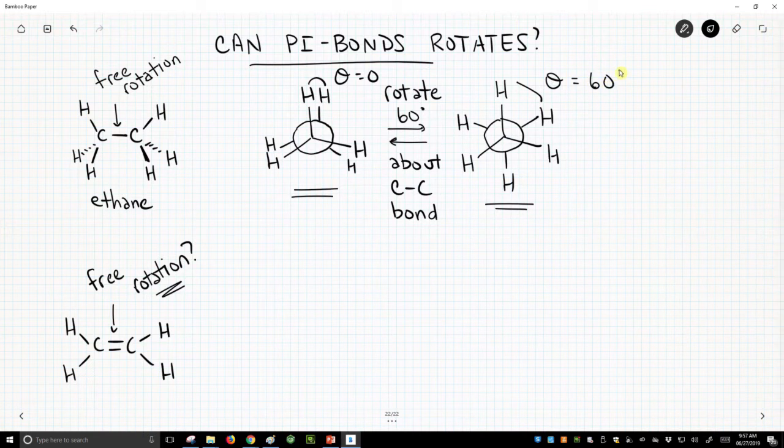That was no problem. It costs some energy to do that, but that energy is easily available, and this is a fast process at room temperature. How about for alkenes? Can we rotate about this carbon-carbon pi bond at the bottom of the screen?